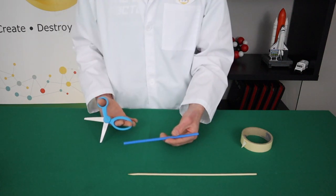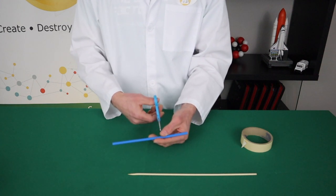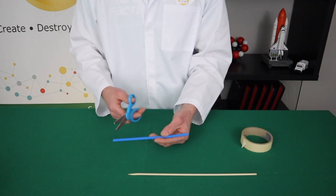So the first thing we're going to do is take our scissors and cut halfway through the straw at the one-third mark and the other one-third mark. But make sure you don't cut all the way through the straw.